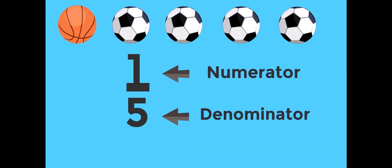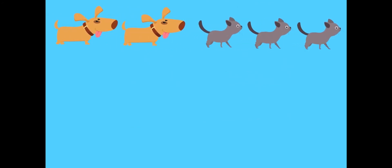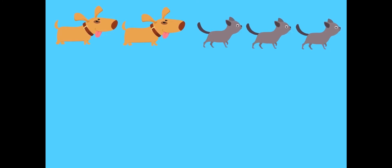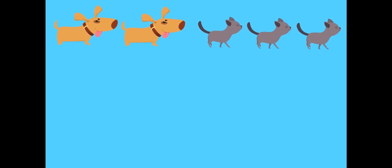Let's try this final example. Let's say there are five pets — two of them are dogs and three of them are cats. What fraction of the pets are cats?